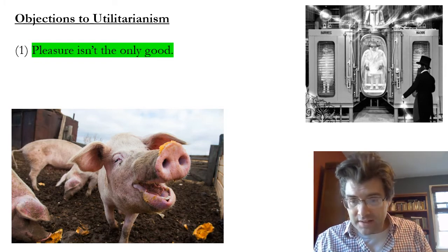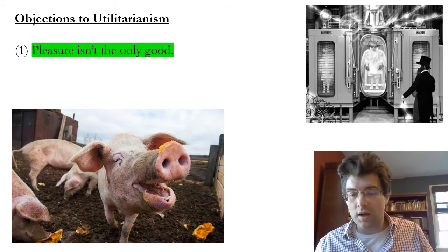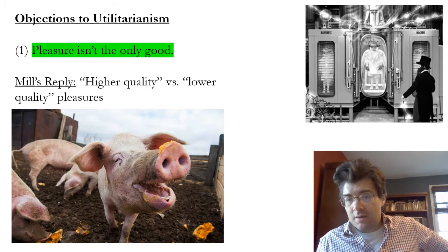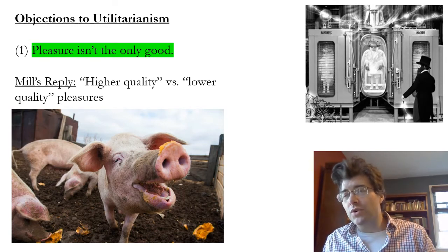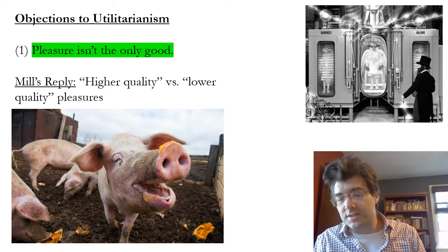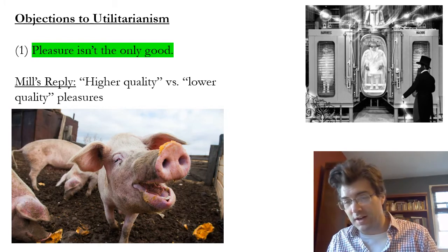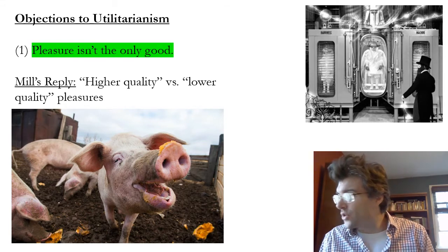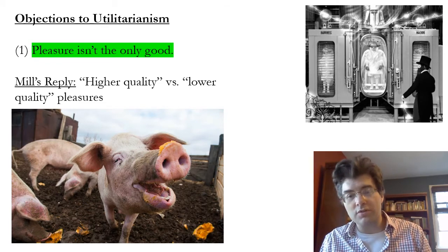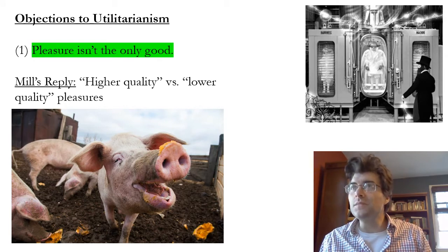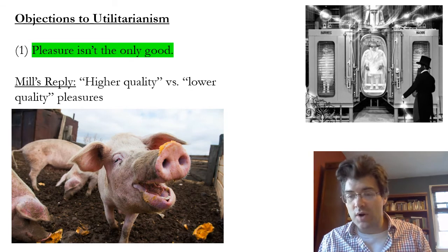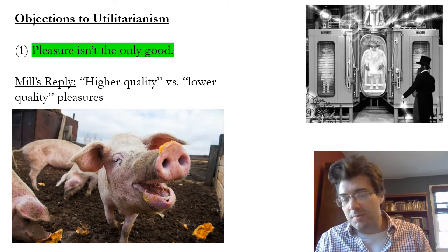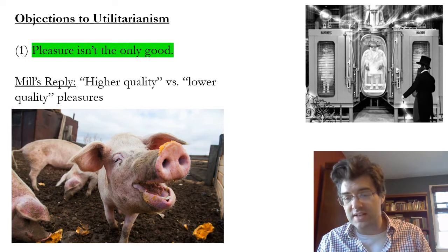There are some possible replies utilitarians can make to these objections. Bentham's response challenges the objector: whatever thing you think is more valuable than pleasure or pain is probably just something that causes you personally pleasure or pain, and you have no more right to say those things are valuable than somebody else does to say that what causes them pleasure is valuable. So ultimately, the standard should still just be pleasure and pain. This argument is actually included in the six pages from Bentham that we read.